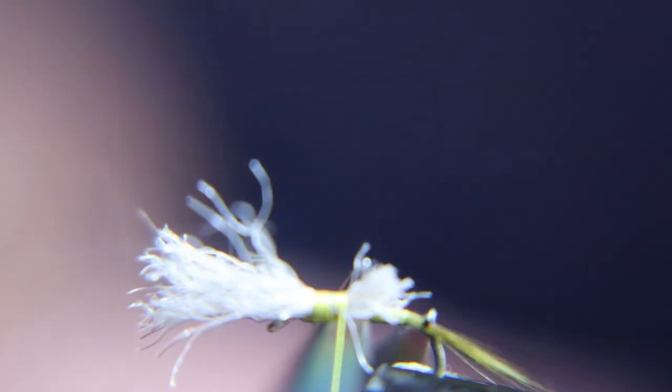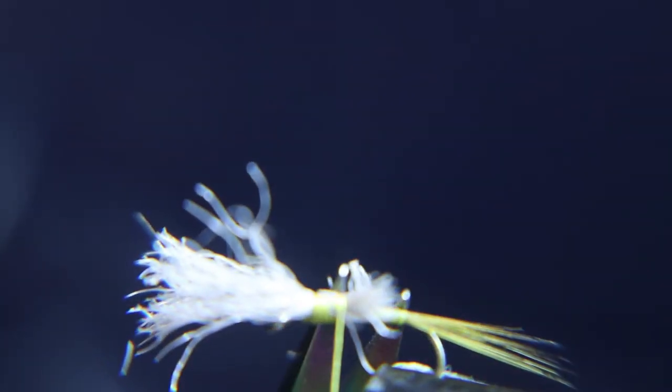Cut off the extra wing material here and try to taper it so that when you wrap your line back it just makes a nice even taper to the body.